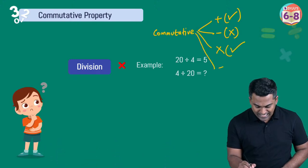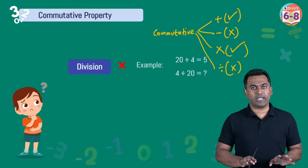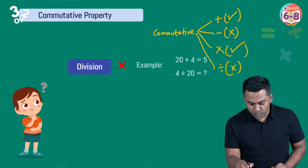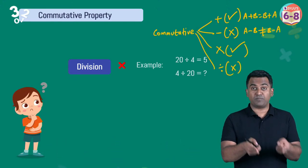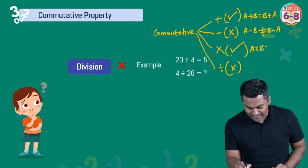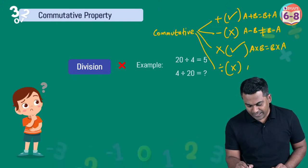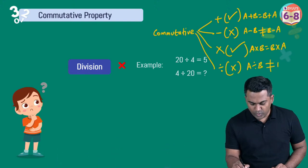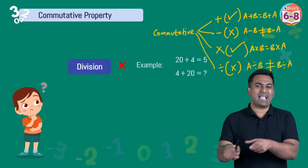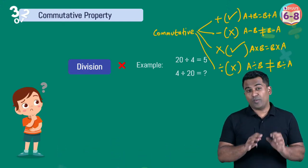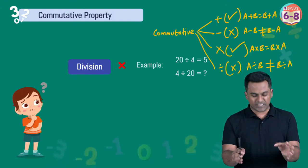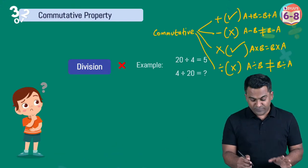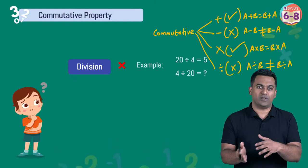Summary for commutative property: addition — yes; subtraction — no; multiplication — yes; division — no. In your notes write: a + b = b + a; a − b ≠ b − a; a × b = b × a; a ÷ b ≠ b ÷ a, with examples beside each. Short notes like these are much easier to revise than reading theory from a textbook.